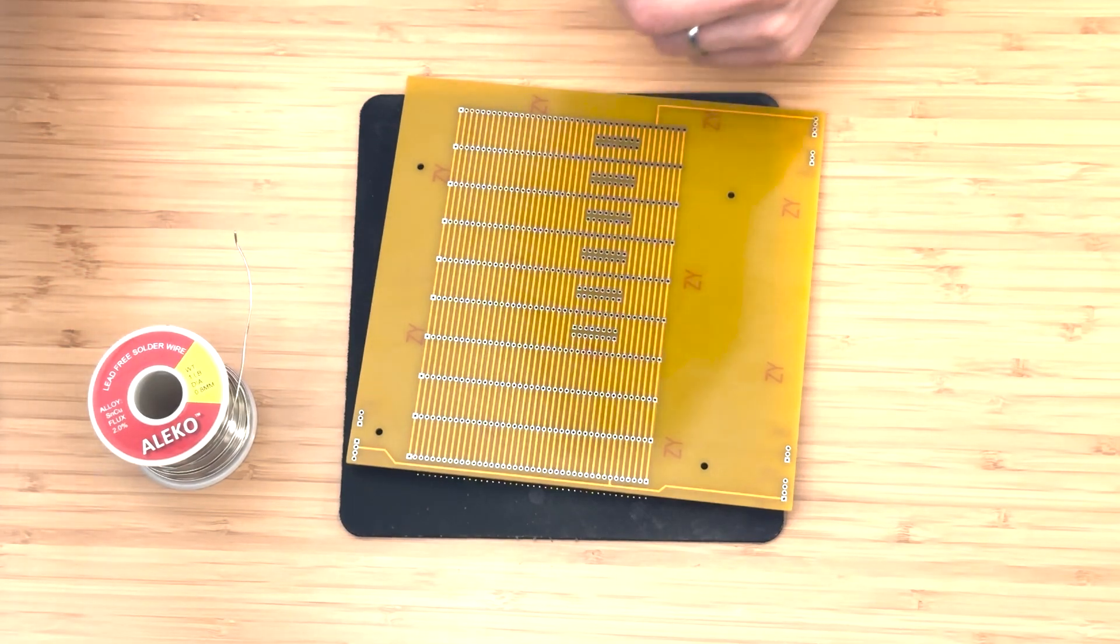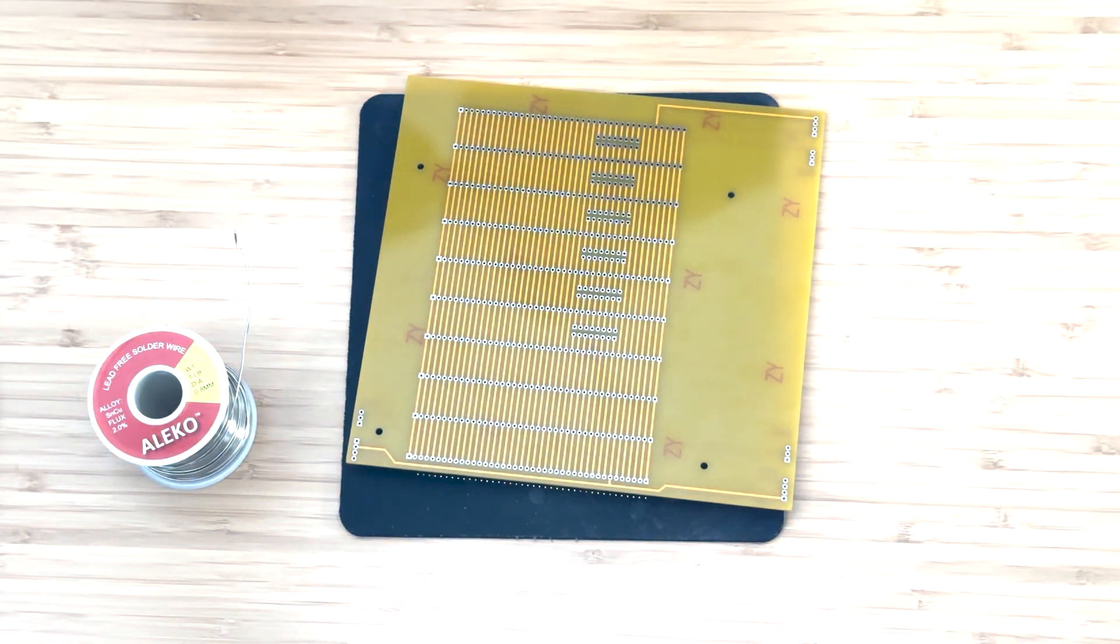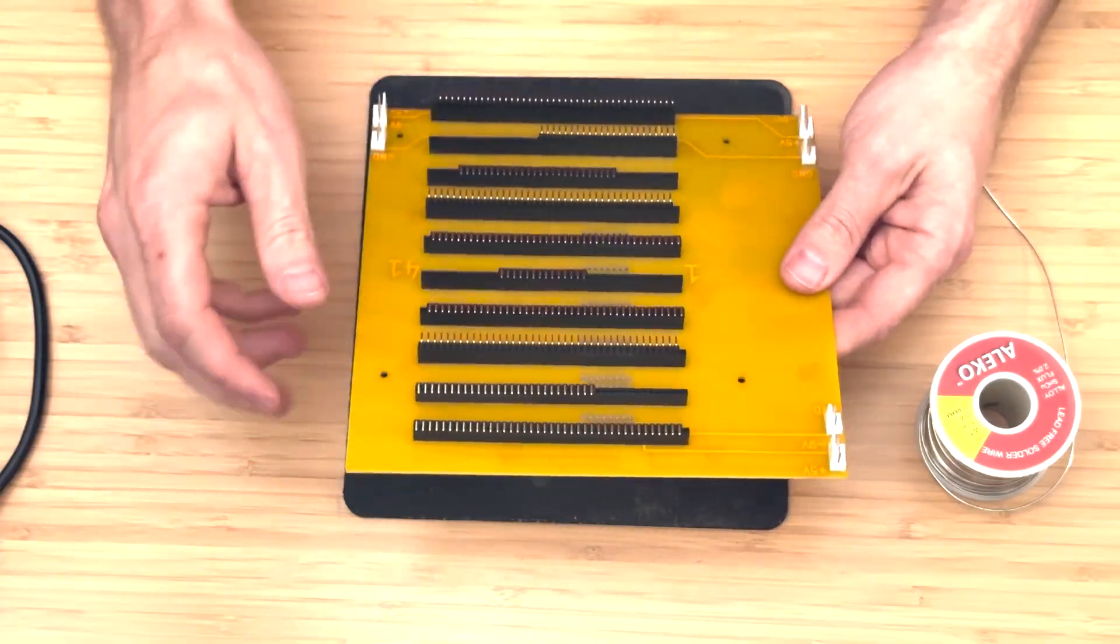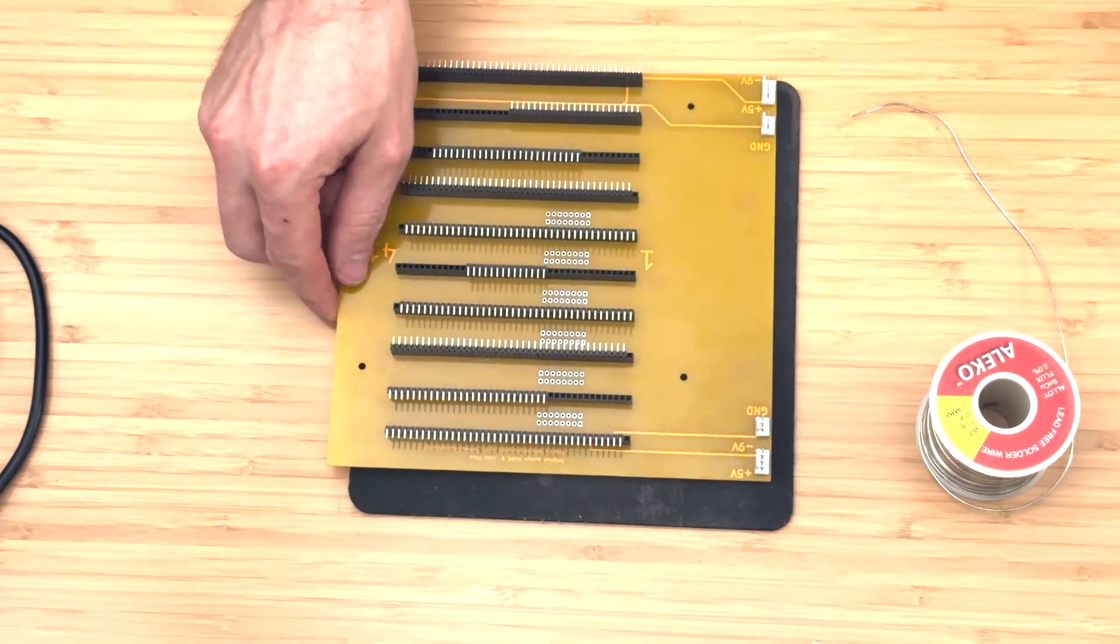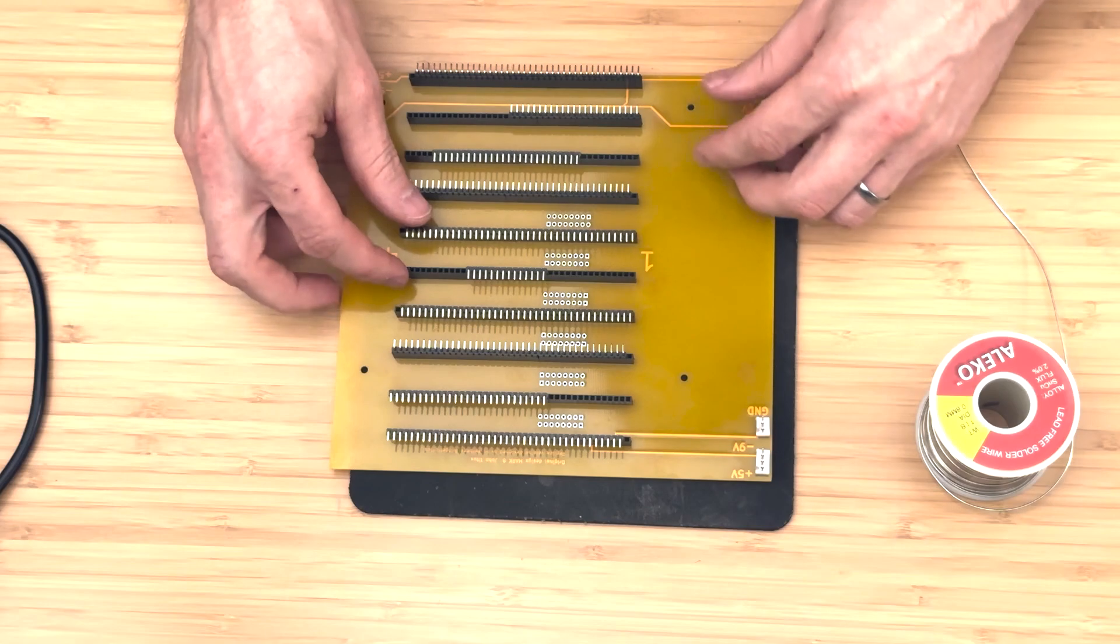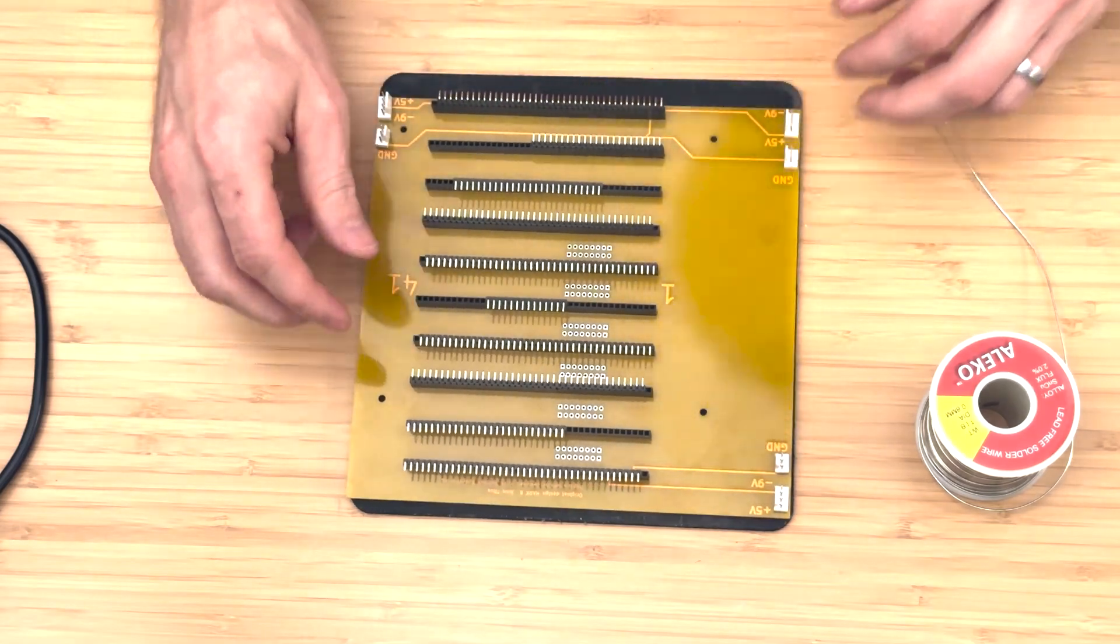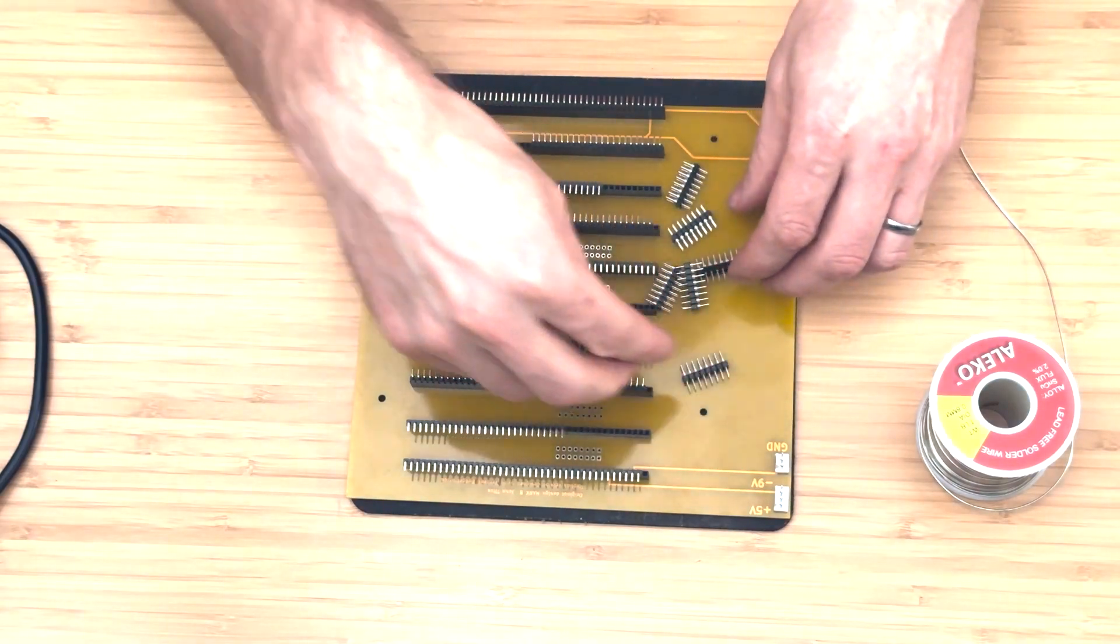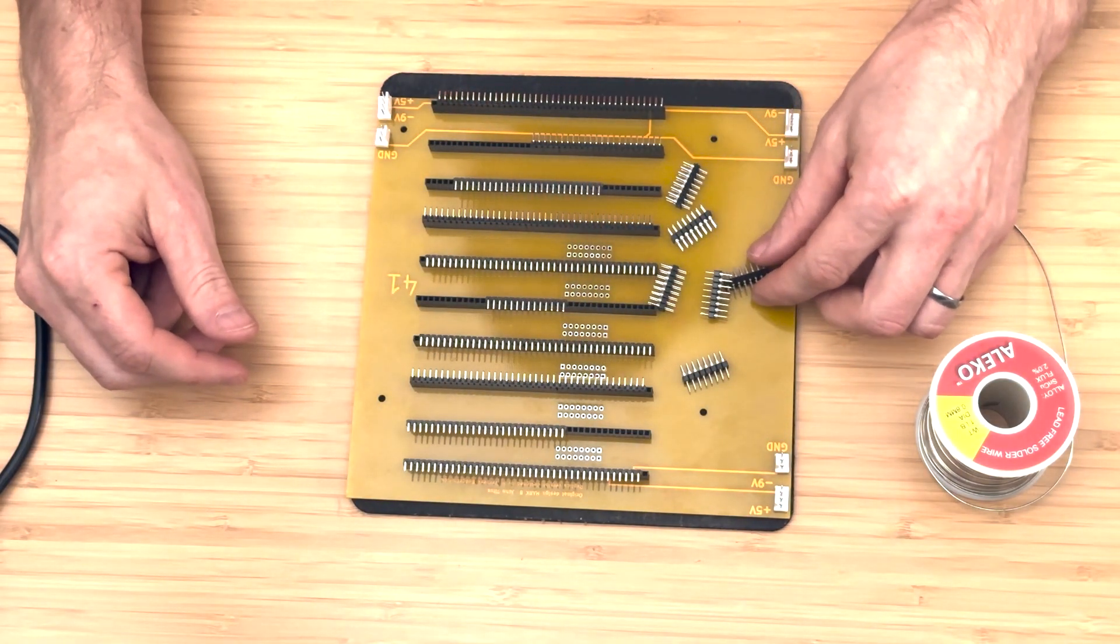You may have noticed that the bus features several lines that are cut, which can be jumpered if necessary. Some of the boards to be installed in this backplane will require these lines to be cut, while others will need to be active. To accommodate a variety of boards, we'll install a 16 position jumper header in the provided holes.